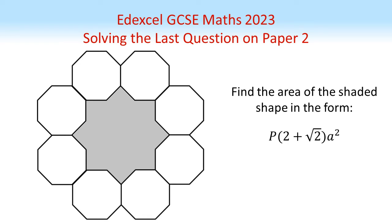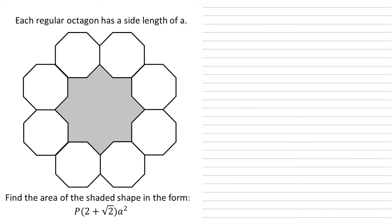In this video we're going to look at the last question on paper two of the Edexcel GCSE Maths 2023, which has been causing a bit of confusion. In the diagram we've got eight regular octagons all joined together to form a star shape in the middle.